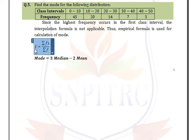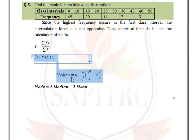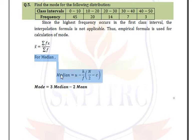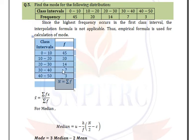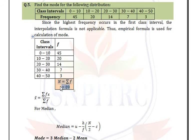The formula for mean is x̄ = Σfx / Σf, because here we have a frequency distribution. The formula for median is: Median = U − h/f × (n/2 − c). First, we find Σf by adding all the frequencies, so Σf = 89.